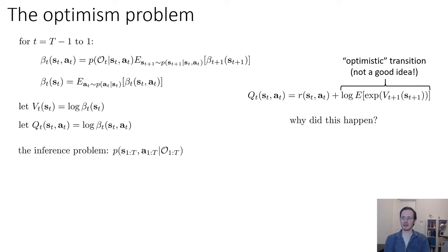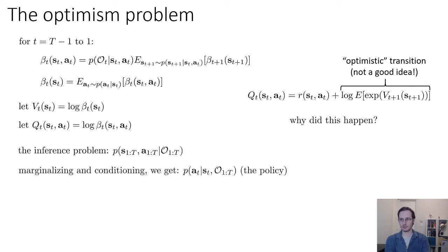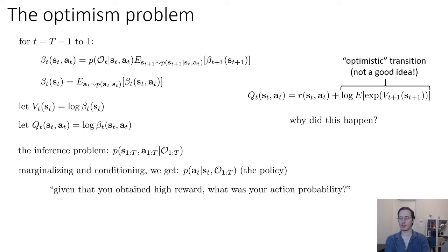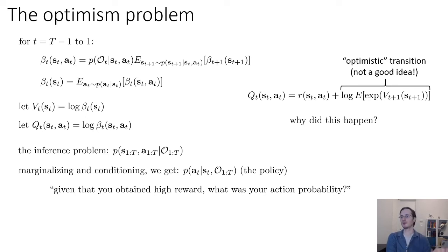Why does this happen? The inference problem we're solving is to infer the most likely trajectory given optimality, and then marginalizing and conditioning gives us the policy P(A_t | S_t, O_1 through T). Intuitively, this asks: given that you obtained high reward, what was your action probability? If you know you got a million dollars, that makes it more likely you played the lottery — but that doesn't mean playing the lottery is a good idea. The inference question we're asking is not quite the question to which we really want the answer. What we want to know is what you would have done if you were trying to be optimal, not what you did given that you got a million bucks.